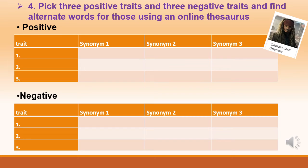Time to use your paper or online thesaurus. Choose three words from each of the positive and negative personality traits. Find alternative words that mean the same thing — three if you can.